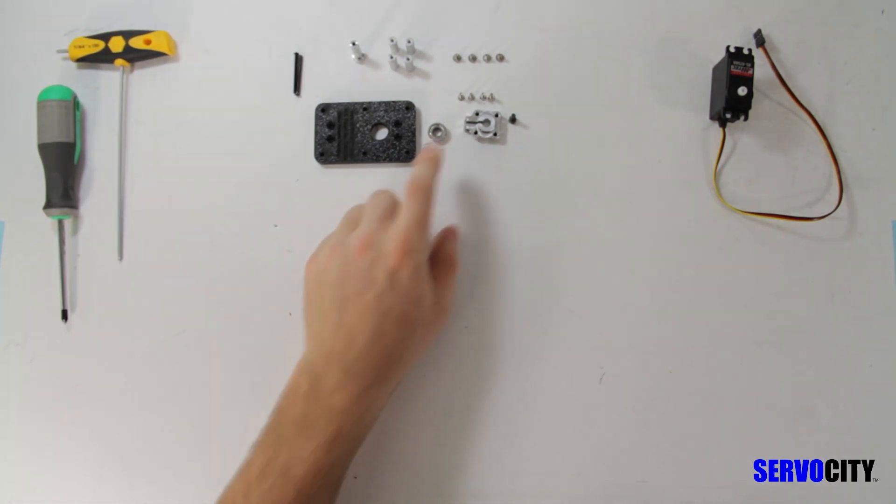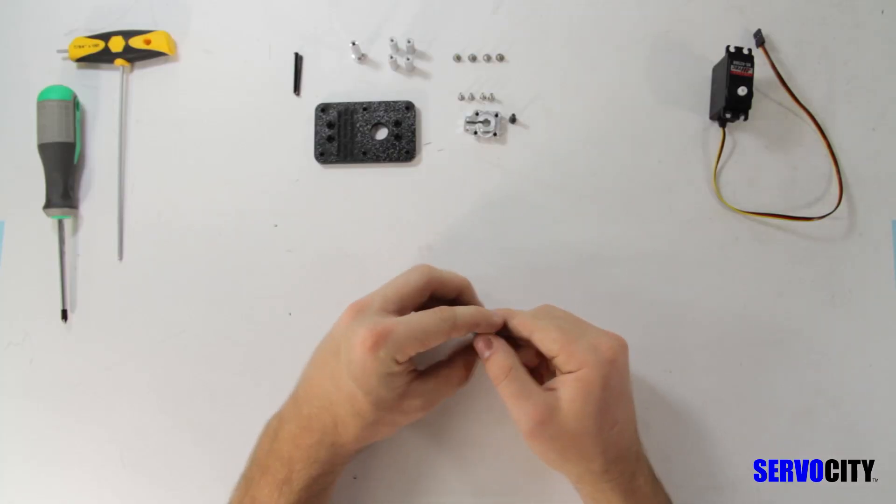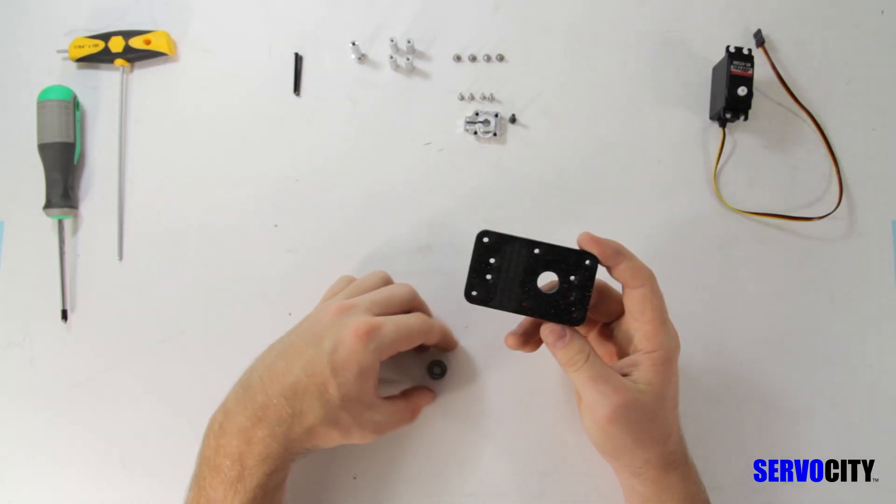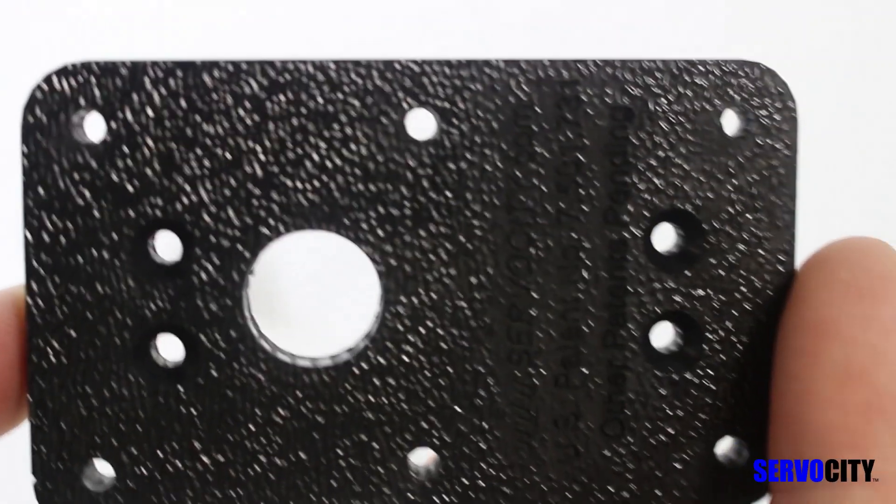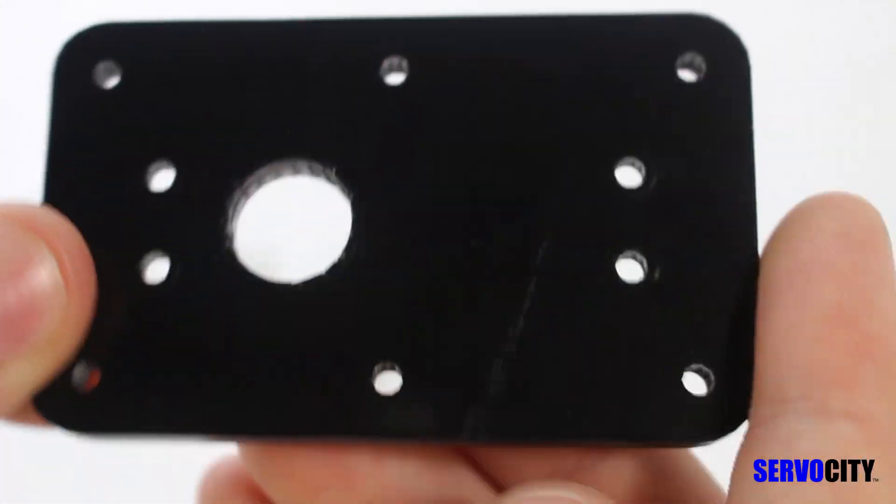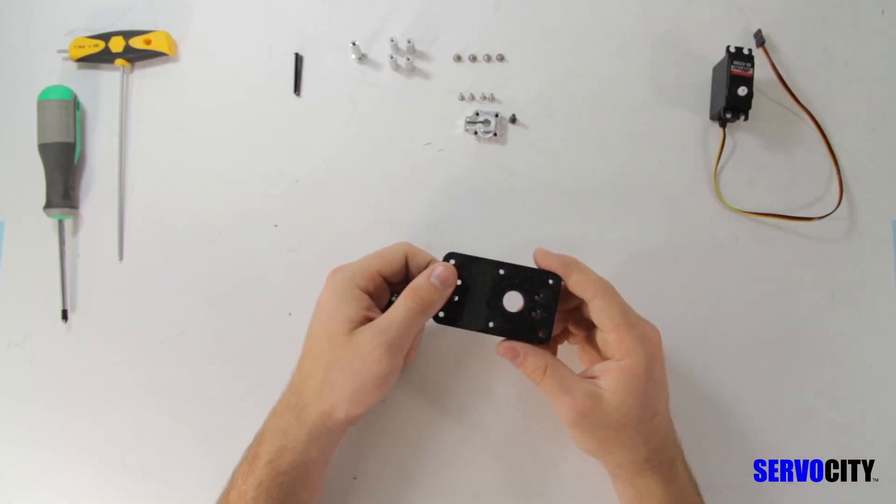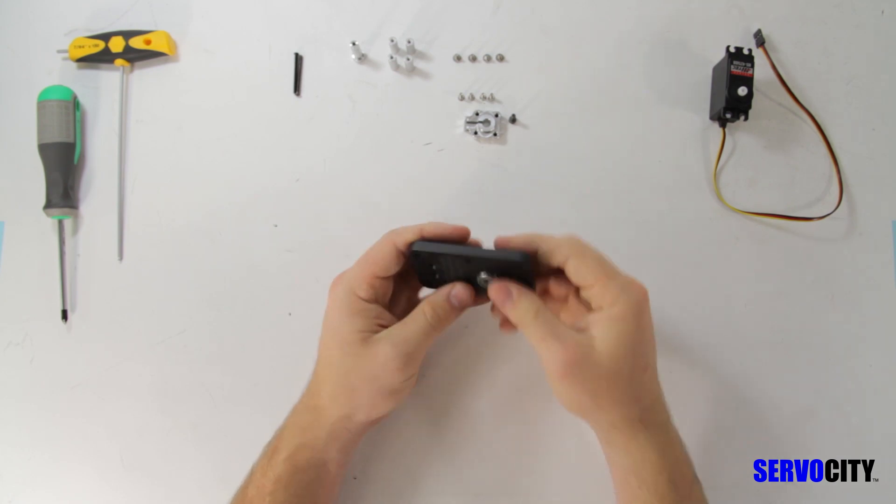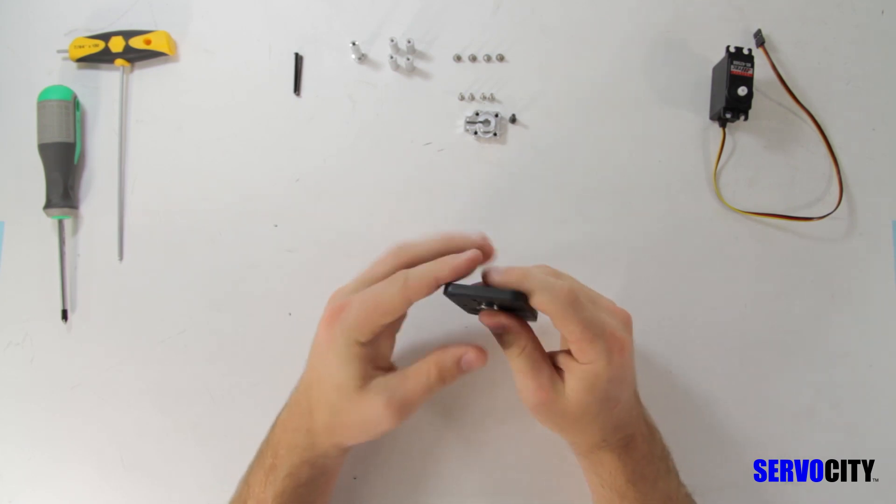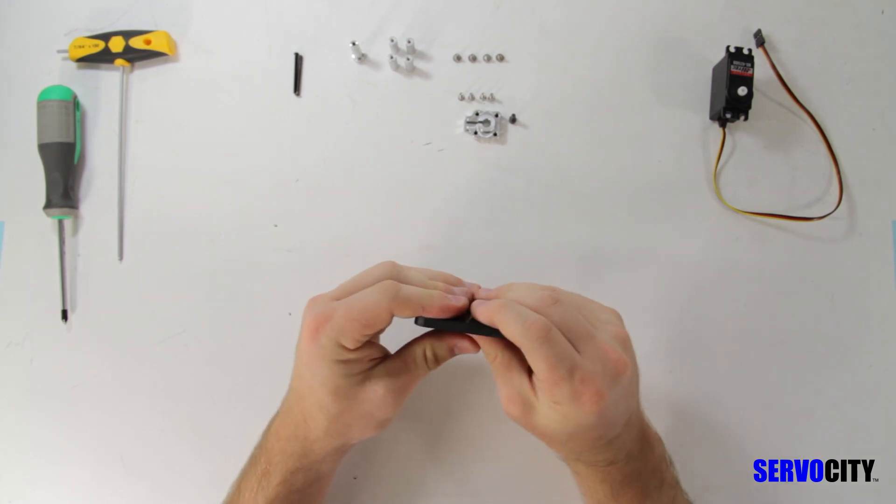First, you will take the ¼ inch precision flange ball bearing and press it into the ABS plate. The ABS plate has a textured side and a smooth side. The textured side is the side that we will be pressing the ball bearing into. This is a pretty tight fit so you might need a hammer in order to tap that in all the way.